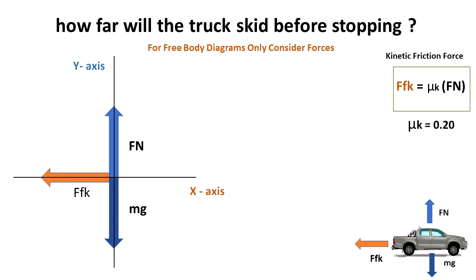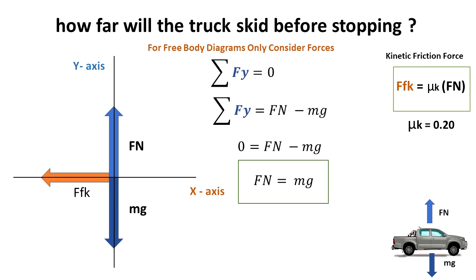So first, we are going to do the summation of the forces in the y direction. And we notice that the truck is not accelerating upwards or downwards because it is on a flat surface. So the summation of the forces in the y direction has to be zero. And the forces that we have in the y are FN minus mg because mg is going downwards. So we see that zero is equal to FN minus mg. And we can conclude that for this specific case, FN is equal to mg.